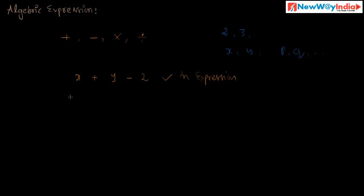Consider another example: 5x plus 7y plus 3c. Here 5 into x, 7 into y, and 3 into c. Here 5 is a constant and x is a variable — constant and variable are multiplied. Here also constant and variable is multiplied. So these are connected by the symbol plus: 5x plus 7y plus 3c.